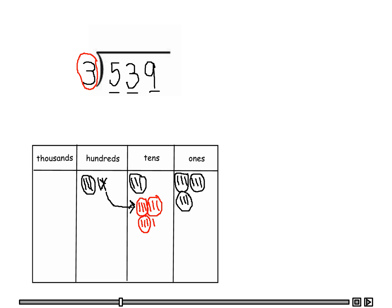Let's do the same with the other leftover hundred — moving it to the tens place. We'll make ten tens: one, two, three, four, five, six, seven, eight, nine, and ten. We can make three groups of three: one, two, and three. Notice we have two left over — we can't make a group of three from those.